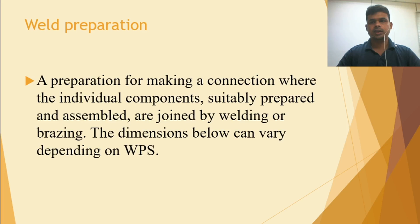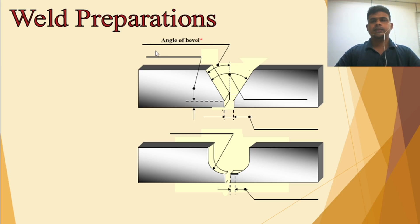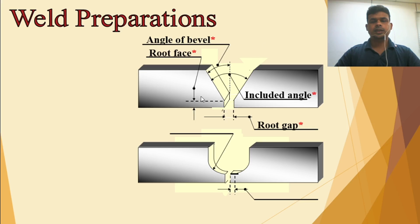I will show you how the dimensions are mentioned in a WPS. From this figure you can see one joint preparation — this is the U joint. You can see the angle of bevel, the included angle, and the root gap. We should keep the root gap for root penetration. There is also the root face and the root radius for the U joint or J joint. All these dimensions we need to follow as per the WPS — the angle, root face, root gap, and radius.